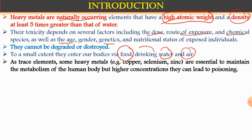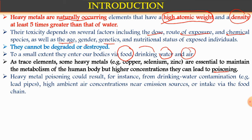Some heavy metals like copper and selenium are essential. The role of copper is very important — it has an enzymatic element. Zinc also works as an enzymatic catalyst. So a small amount is no problem at all. But when the human body is exposed to a high concentration, it can lead to poisoning. The main poisoning is due to food and drinking water contamination, which then transports into the metabolic system.